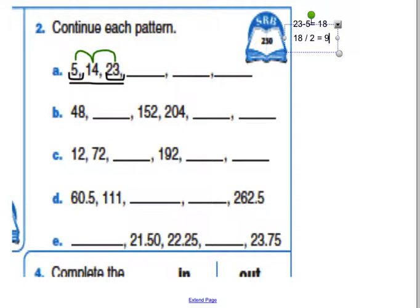What that tells me is that I am changing by 9 each jump. And I have to think, am I adding 9 or am I subtracting 9? Well, I'm starting at 5, my number is getting bigger. So I must be adding 9.